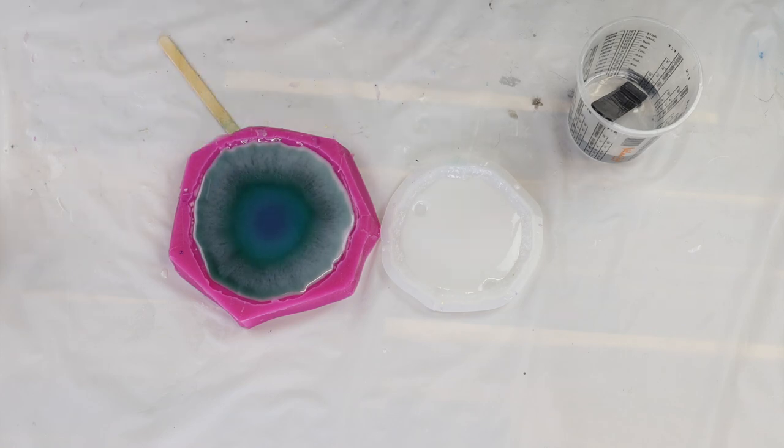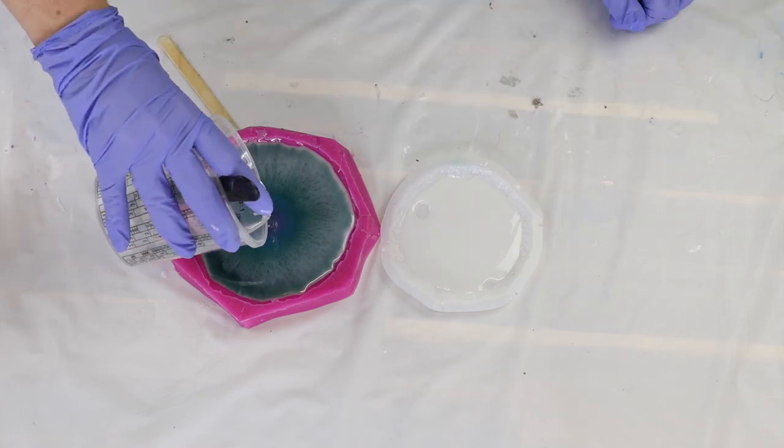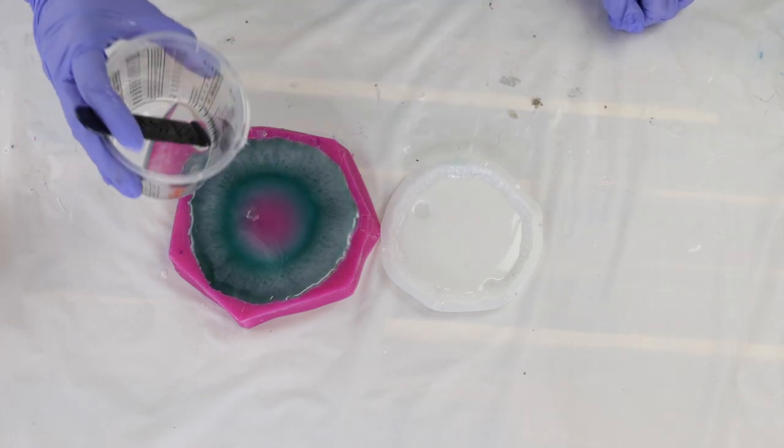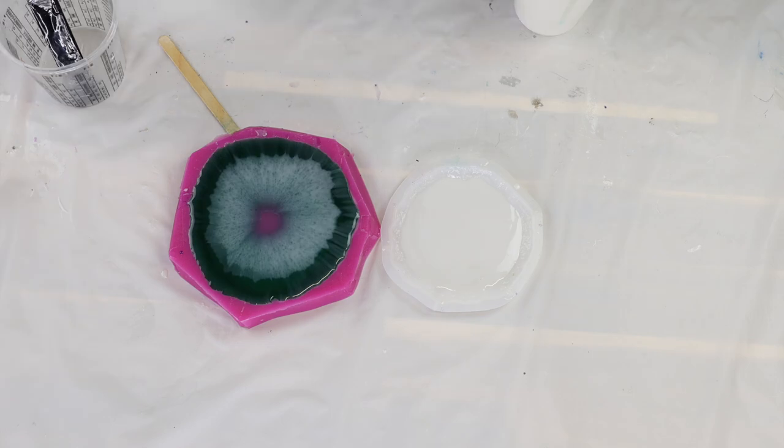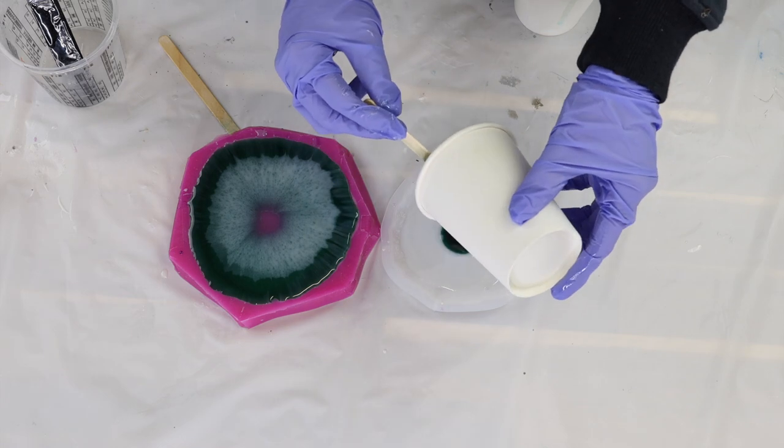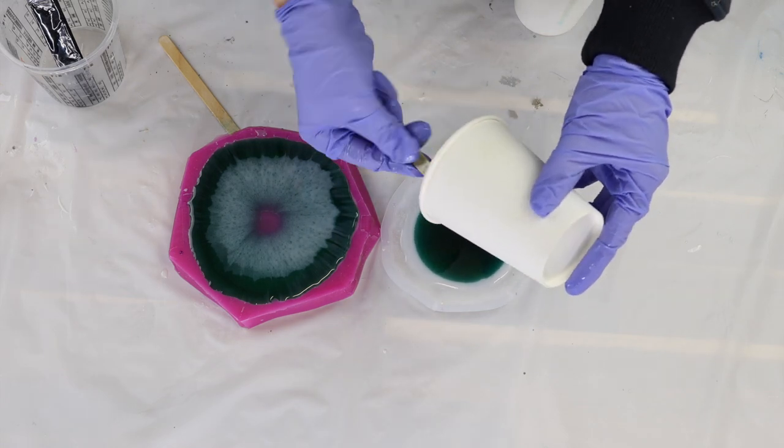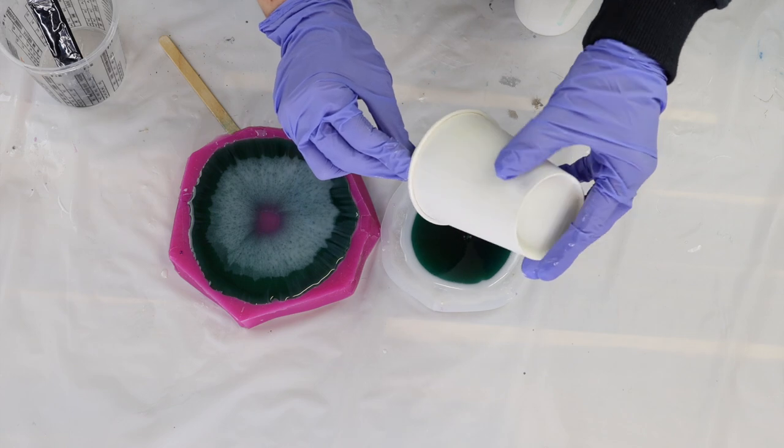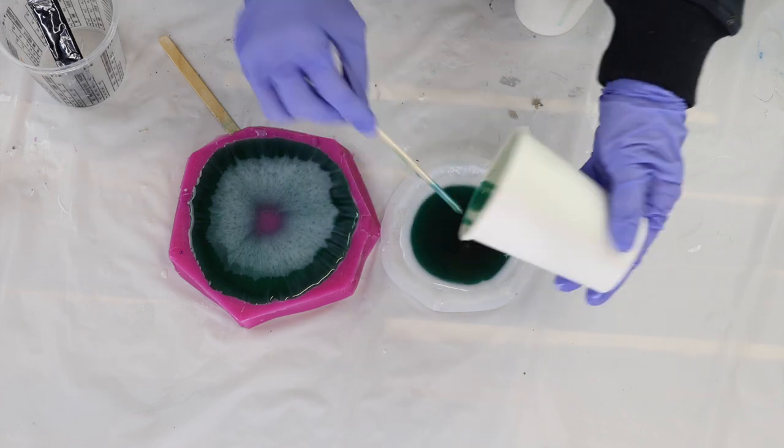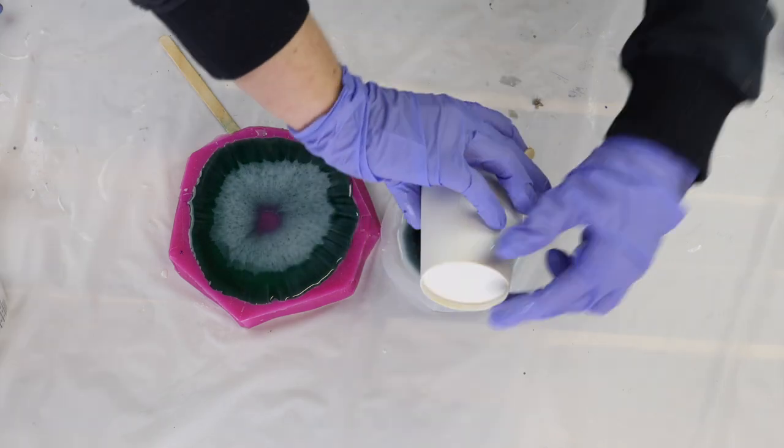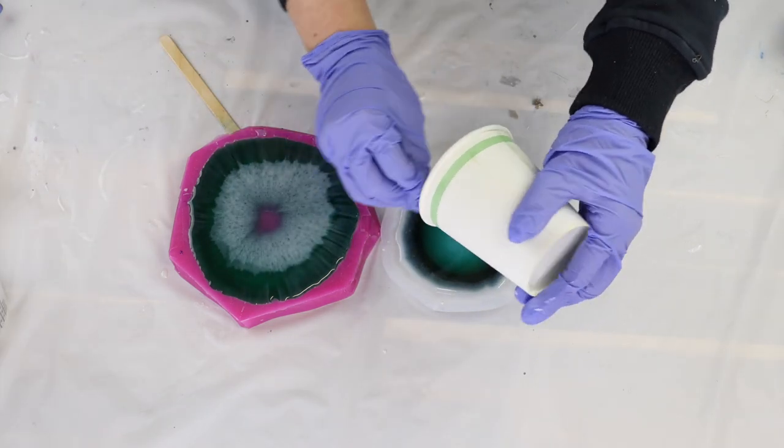I do use my blow torch to just pop any bubbles that were on the surface. And another tip that was left on the last video was wait until the white has come all the way across into the center and then pour your clear. So that is what I've done on this one. I waited for the white to start to come all the way back into the center and then pour the clear on top. And now with this one I'm following the exact same steps just on my smaller coaster mold.